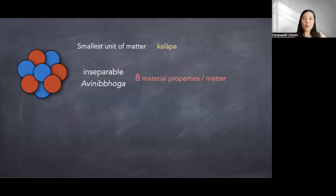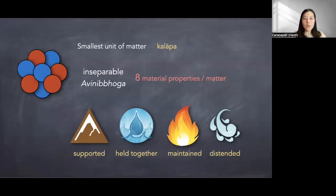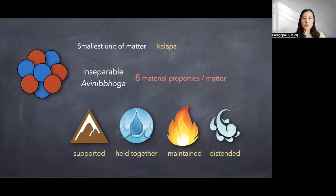They are supported by the four primary elements — supported, held together, maintained, and distended by these four primary elements. Earth, water, fire, and air element are four of these inseparables. Although we say they cannot be separated, because they are a combination of different material properties, each has its own characteristic and can be known by the mind separately. When we contemplate the earth element, we know it is hardness or softness. So with the mind we can separate them, but physically it is not separable.